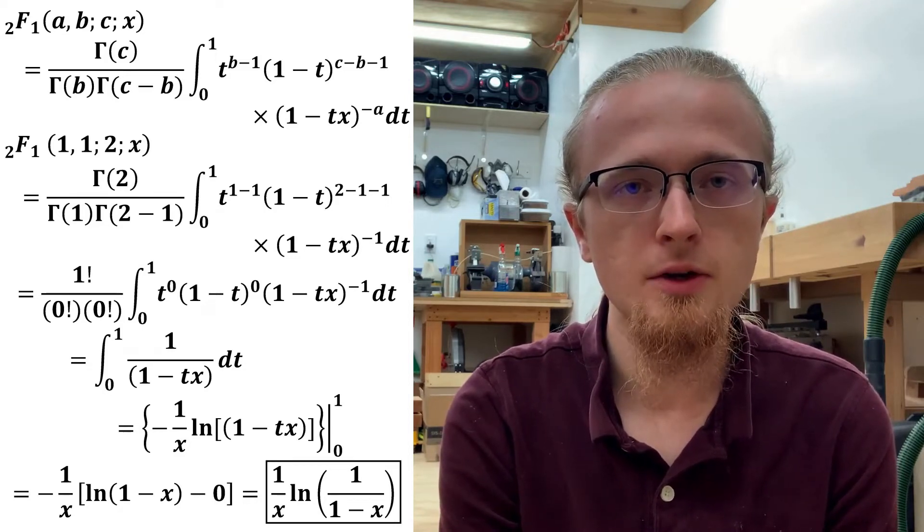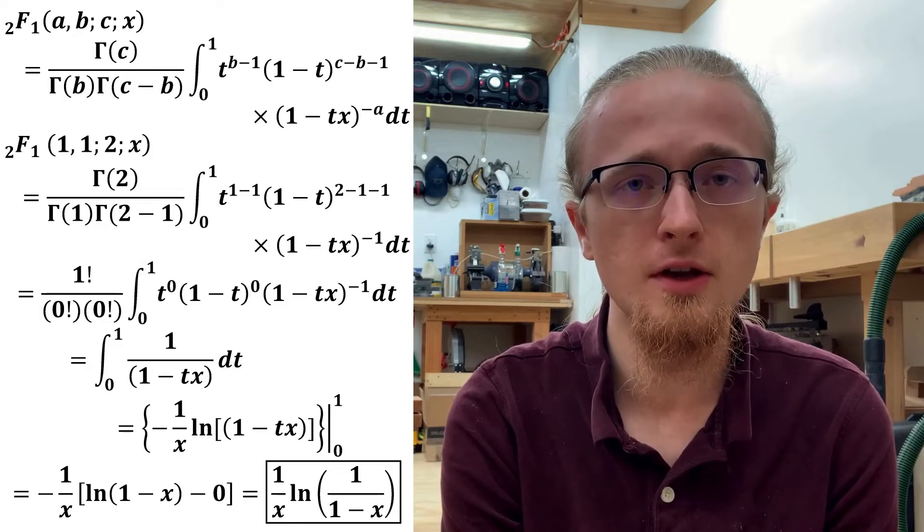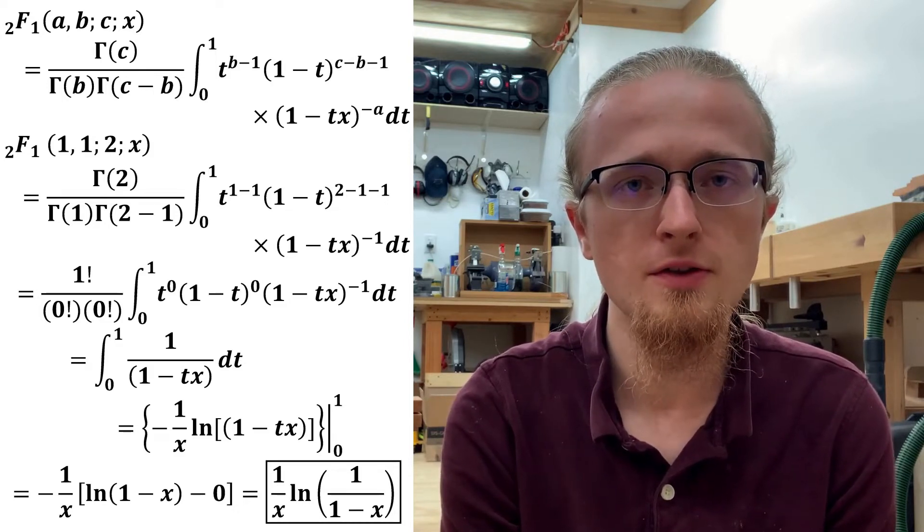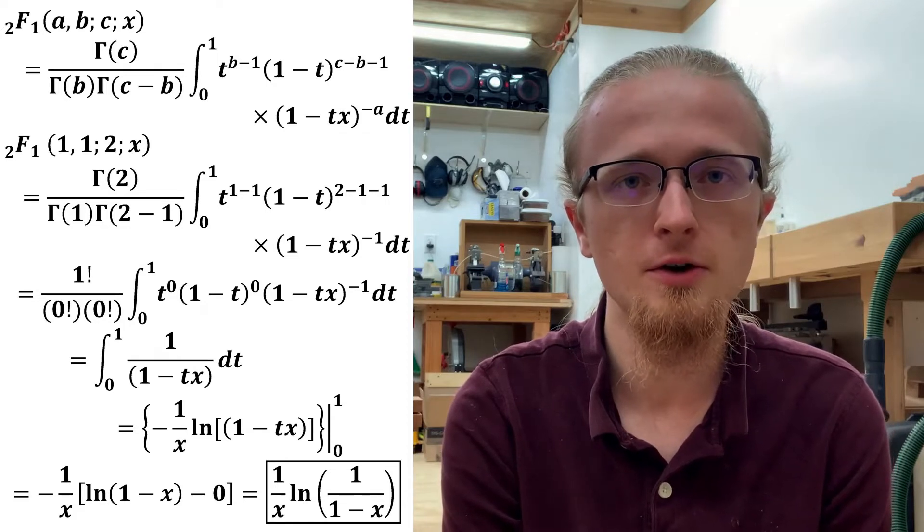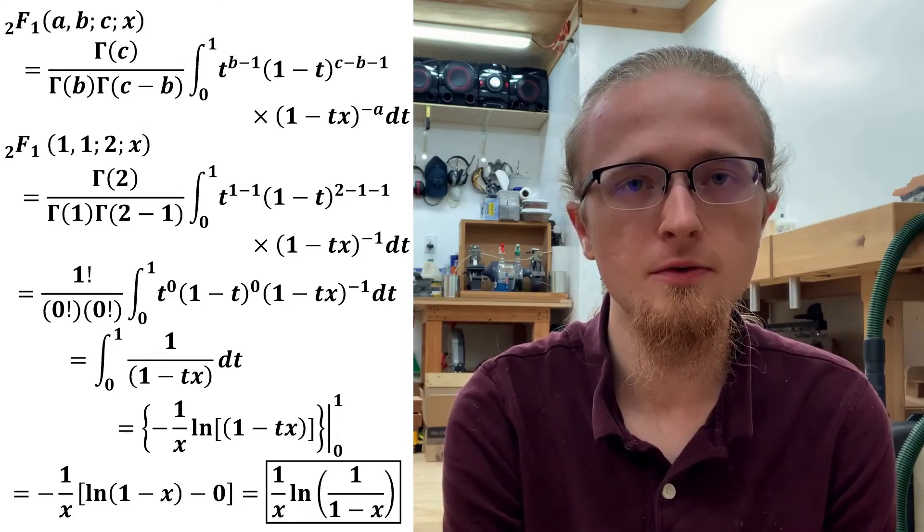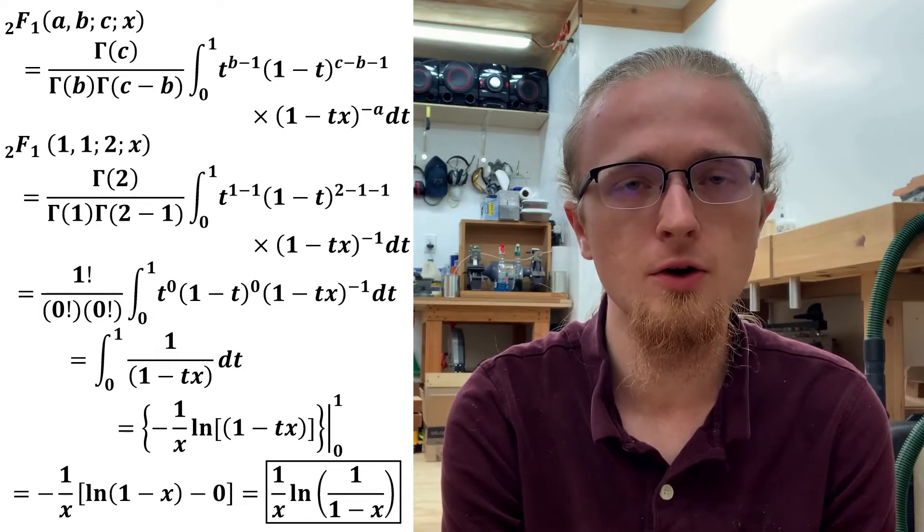By obtaining this answer, we have successfully started with the integral formula for the general hypergeometric function, and proven that this particular hypergeometric function can be written in terms of simple functions, specifically in terms of logarithms and a factor of one over x. Now let's move on to the second example.